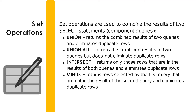Let us now discuss the following set operations. We will use UNION if we would like to return the combined results of two queries and eliminate any duplicate rows. We use UNION ALL if we would like to return the combined results of two queries but we do not want to eliminate the duplicate rows. Next, we use INTERSECT if we only want to return the rows that are in the results of both queries and still eliminate the duplicate rows.